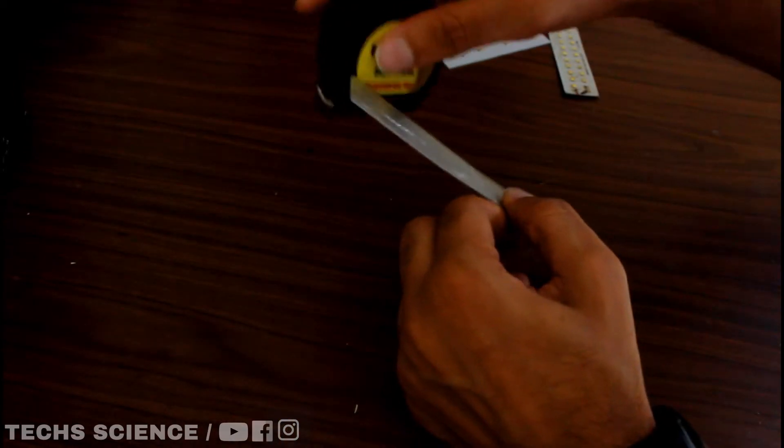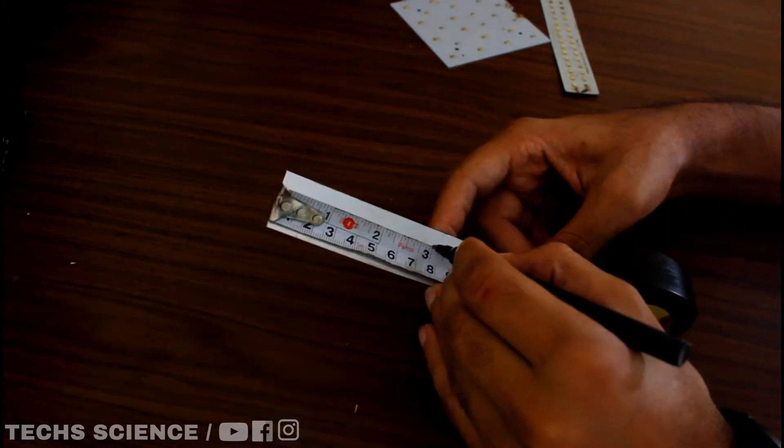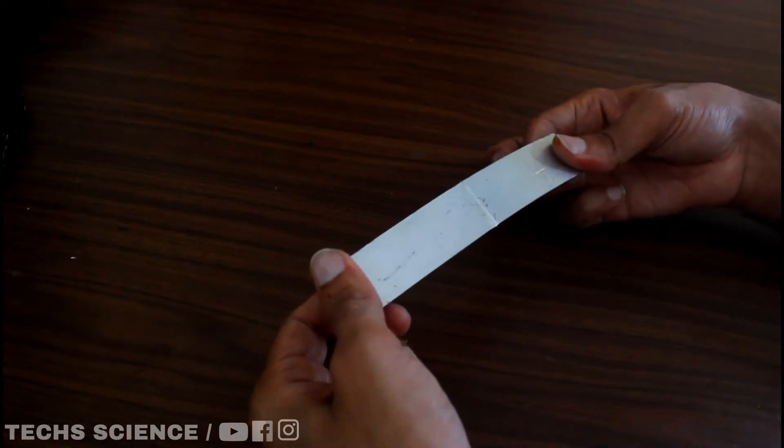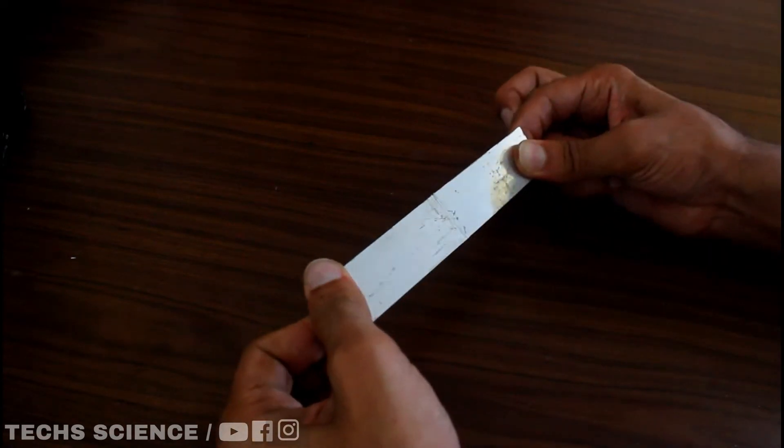I got this aluminum strip from an old LED light and I will cut two similar strips and place three LEDs on each of them. And if you don't know, it works as a heat sink.